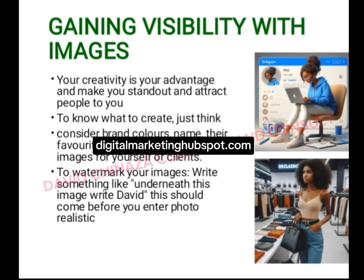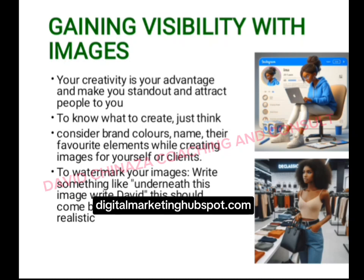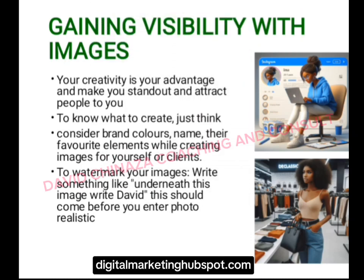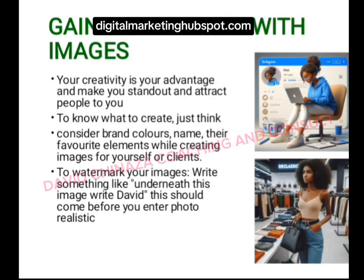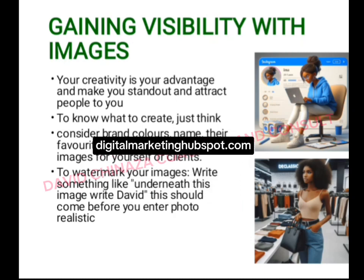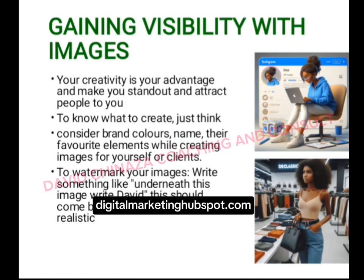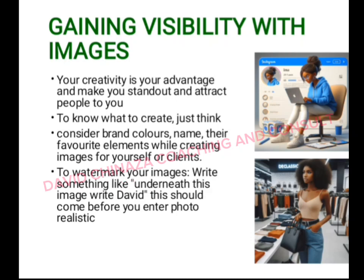Some of you may be asking how you can watermark your AI-generated image so that people will not just use it as their own. The simple way is: while generating your AI images, after your main prompt — your prompt being the command you give the AI to generate, for example, 'generate an image of a man wearing a blue shirt' — at the end of the prompt, you also add another prompt and say, 'beneath this image, add your brand.' For example, add 'David' as a watermark. You simply tell it to add your inscription as a watermark below, and you'll see it adding it as a watermark. By so doing, your image remains peculiar and unique to you.